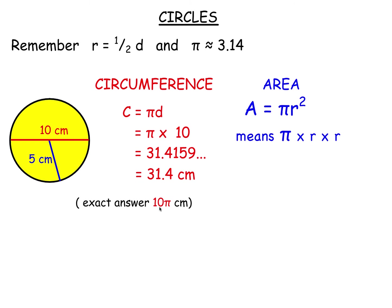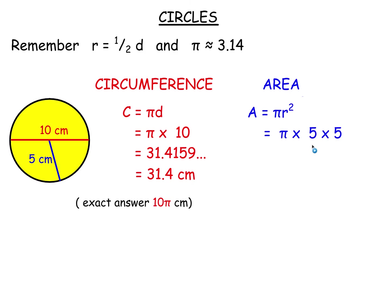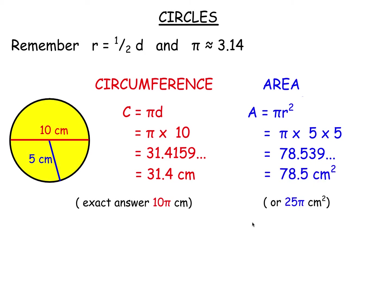The exact answer is 10 pi, because we can't express pi as a decimal. For the area, use pi r squared with radius equal to 5. Simply put in the radius as 5 — I would write it twice so you remember you are squaring it. That gives 25 pi, which is the exact answer. If you use pi to some degree of accuracy — 3.141592 etc. — and round it, it is approximately 78.5. So the exact answer is 25 pi.